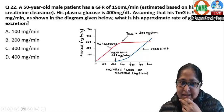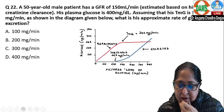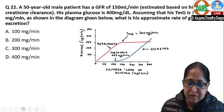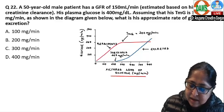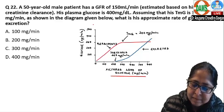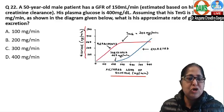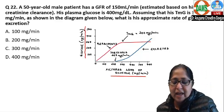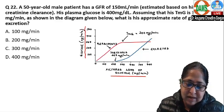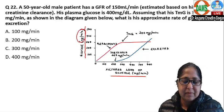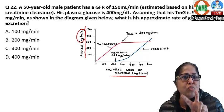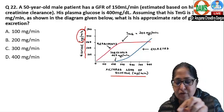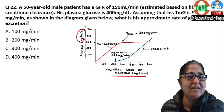Looking at this graph, the x-axis shows the filtered load of glucose in milligrams per minute, and the y-axis shows the rate at which glucose is reabsorbed or excreted, also in milligrams per minute. There are two lines on the graph — one for reabsorption and one for excretion.